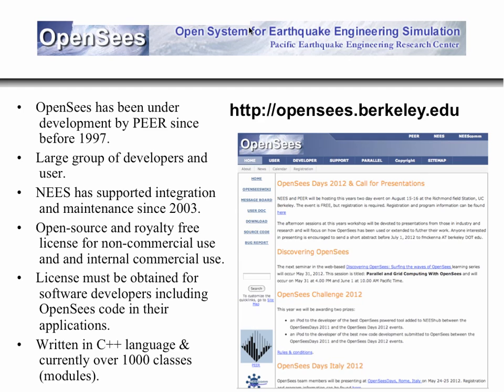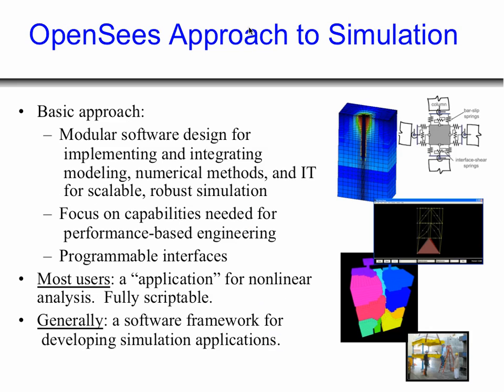OpenSees is written in C++ and there are currently over 1,000 classes in it. Our basic idea when setting up the code was to make it as modular as possible — we wanted people to be able to plug and play with different things, try different ideas, not just materials and elements, but also different solvers and integration strategies.